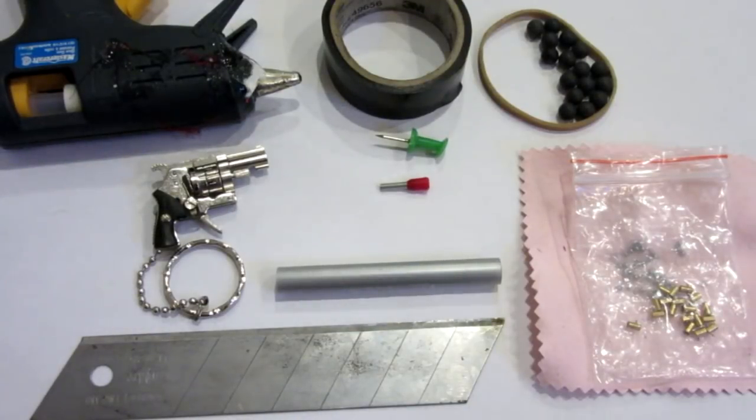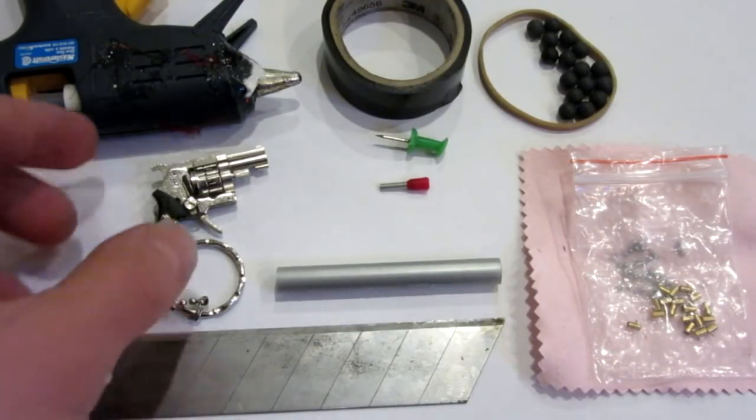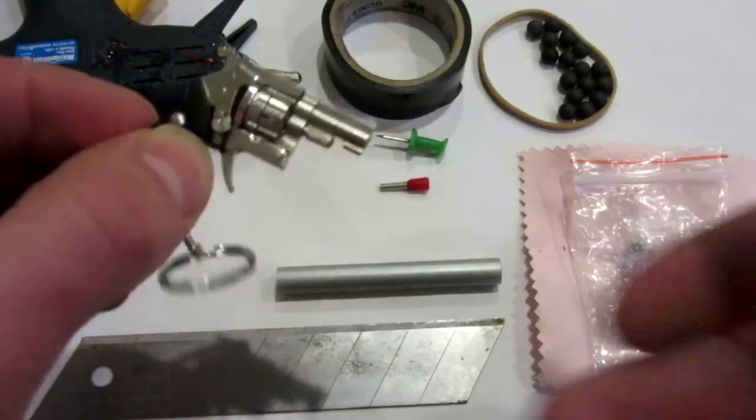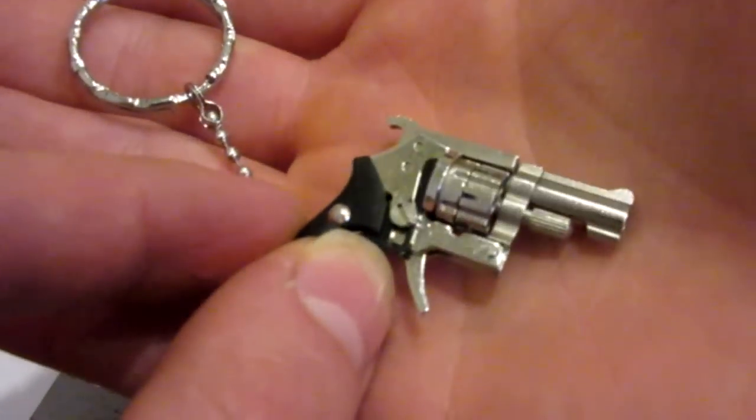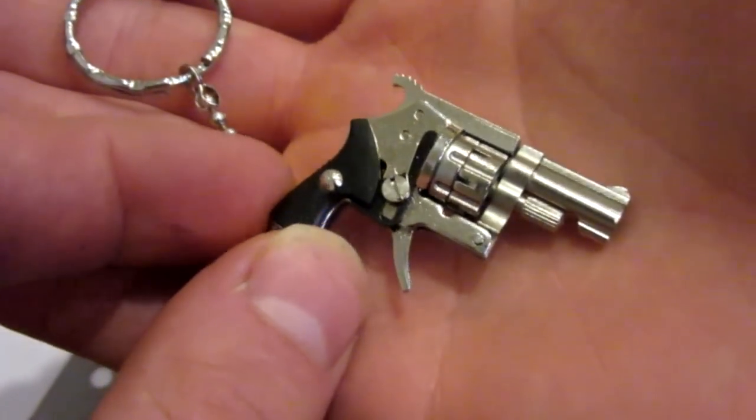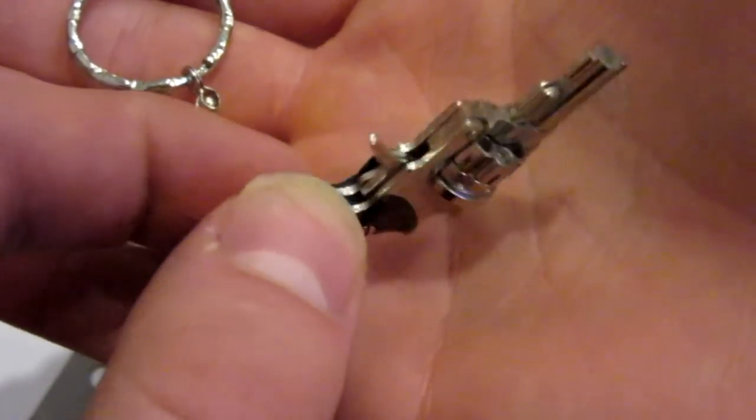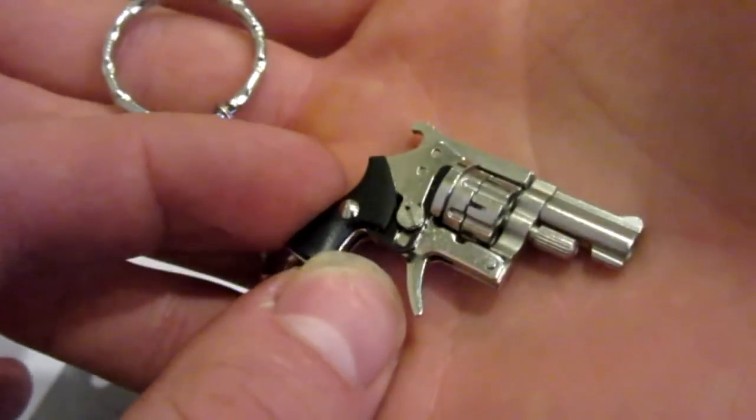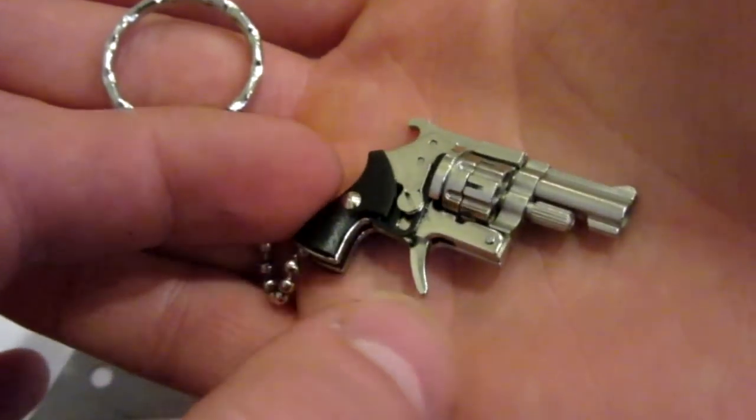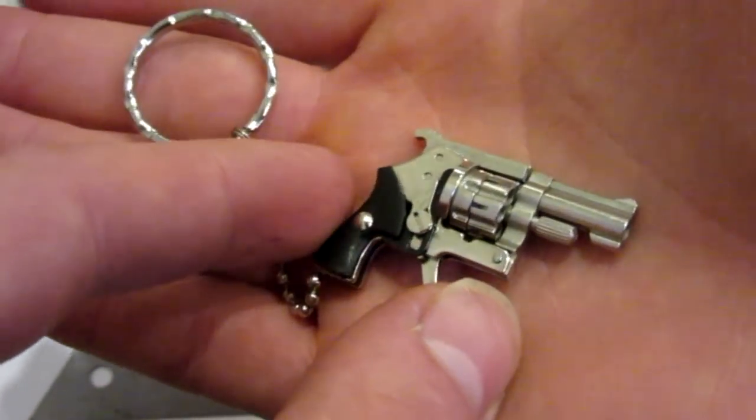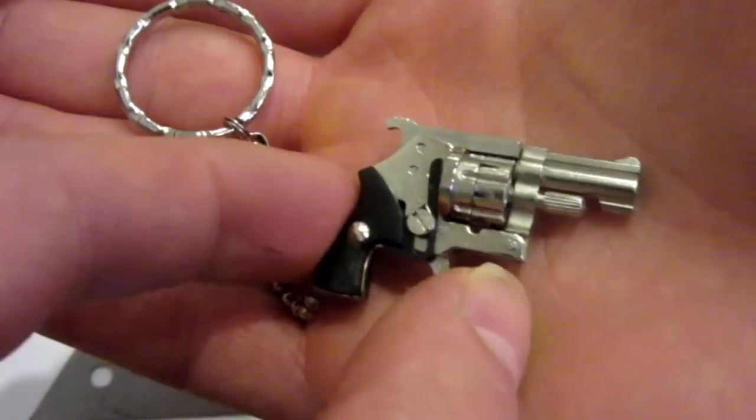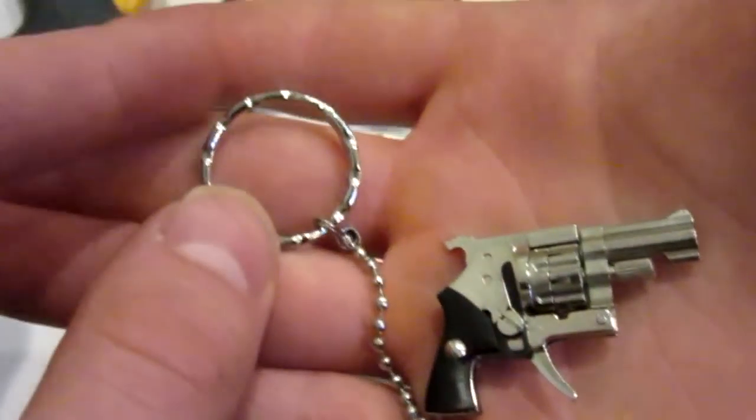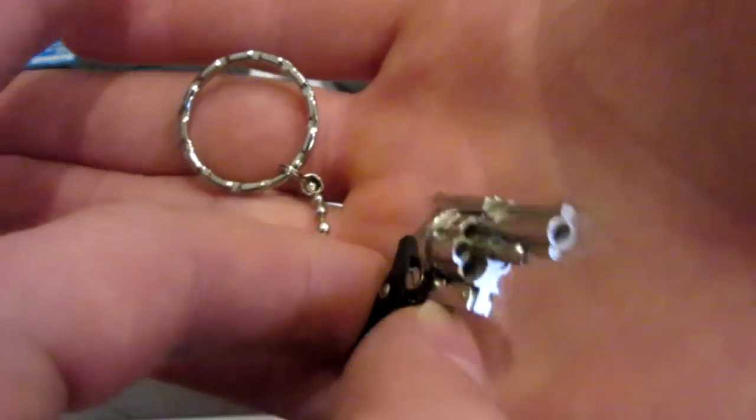The main component for this miniature airsoft gun build is this 2mm miniature revolver. This was given to me to do a review. I made a full video on it on my channel, so if you haven't seen that video, please go check it out. But essentially, this is a 2mm, being the caliber size of the gun, pinfire revolver. As you can see, there's a keychain, and on my hand it's very tiny.